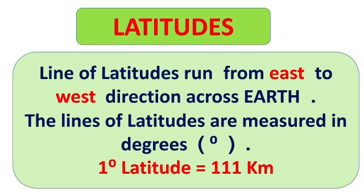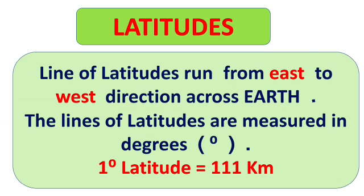First are latitudes. They are also called parallels. Lines of latitude run from east to west across the earth. The lines of latitudes are measured in degrees, and one degree of latitude is equal to 111 kilometers. Kilometer is the unit of distance. We can calculate the distance with the help of latitude. Latitude of a place tells us how far that place is from the equator.